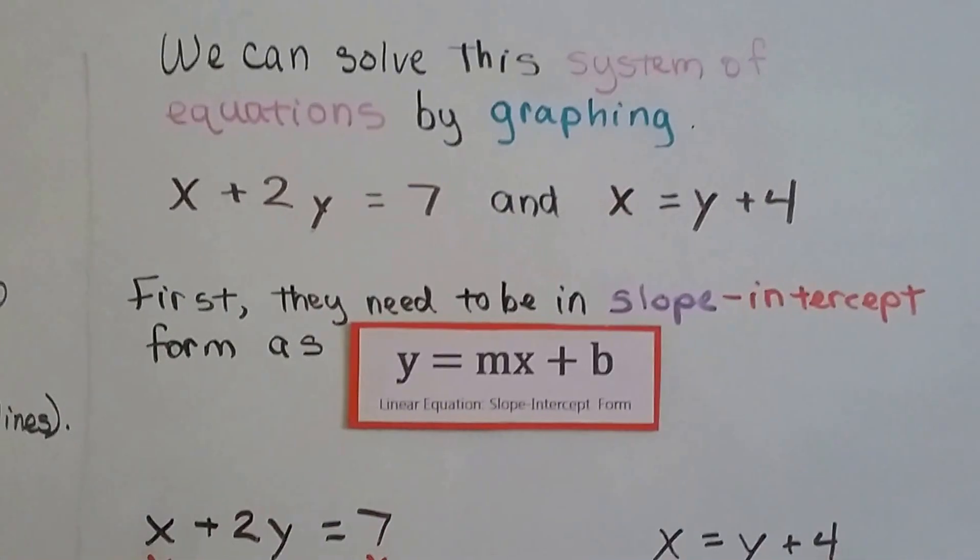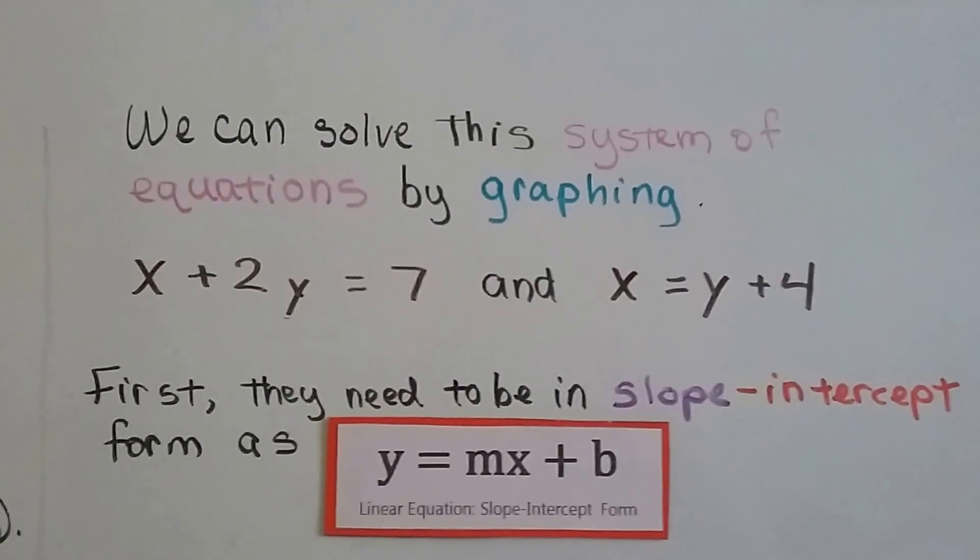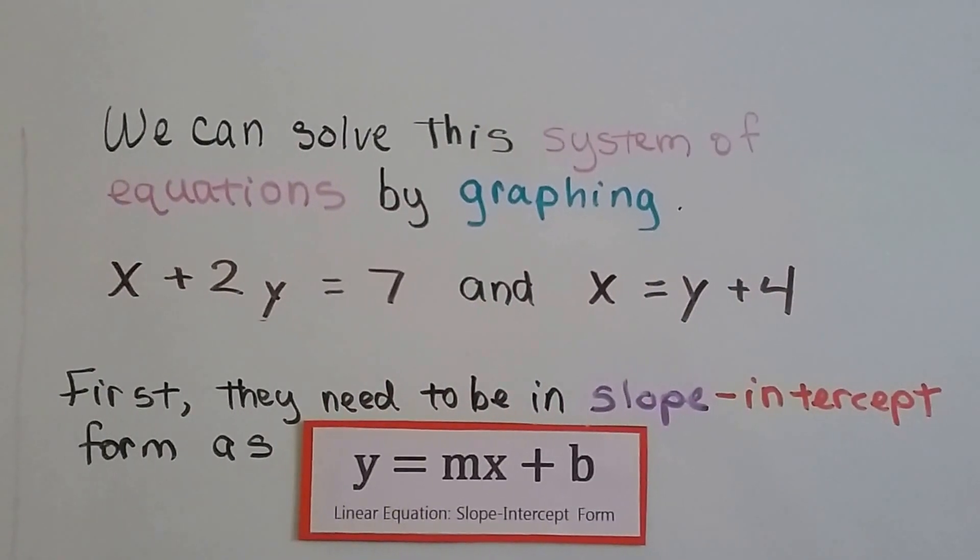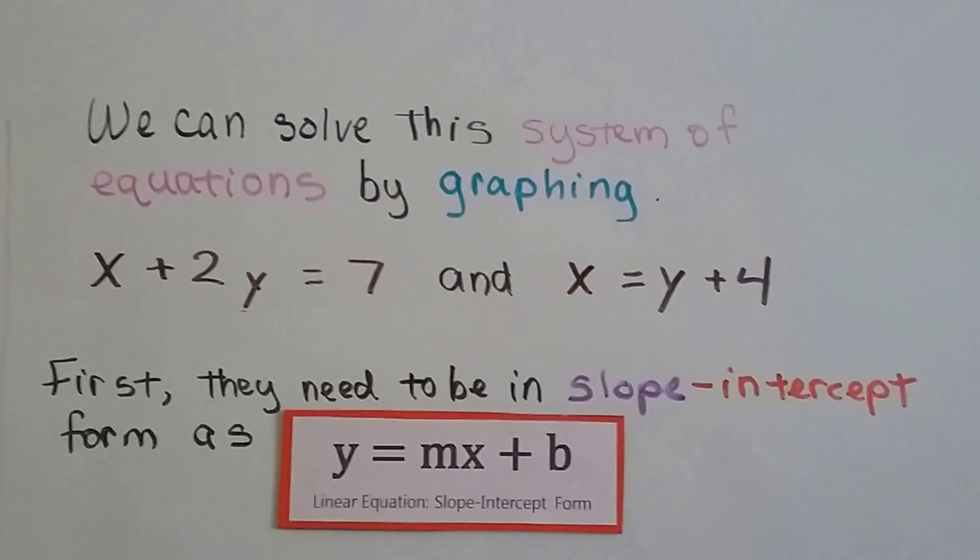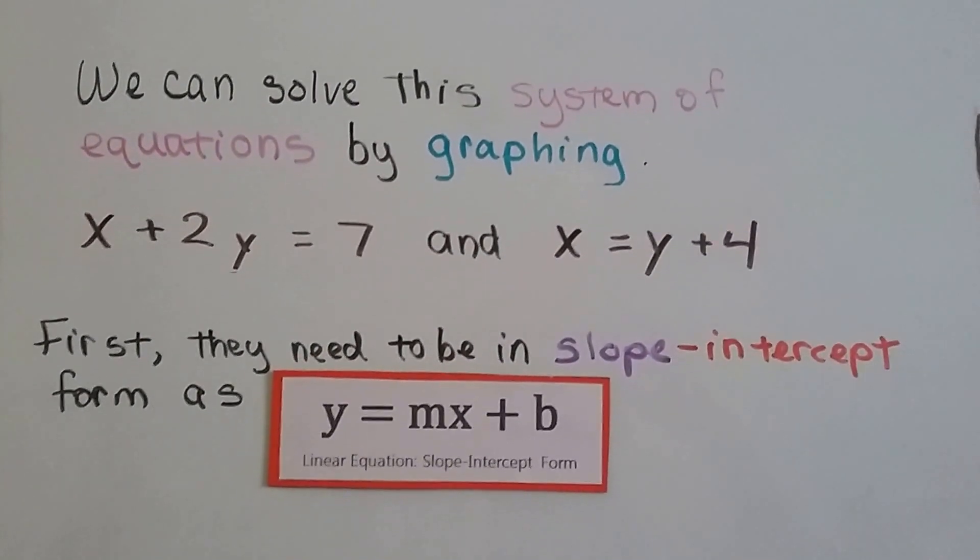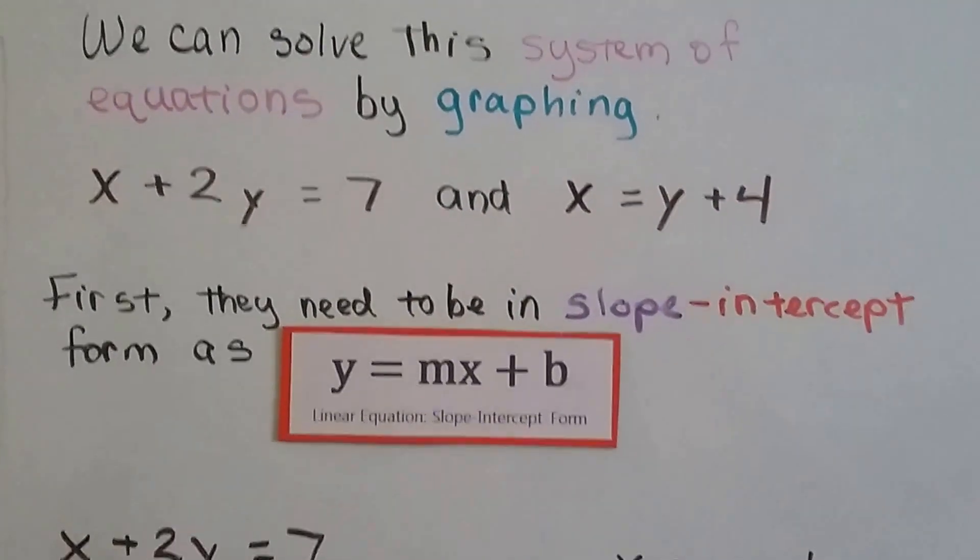We can solve the system of equations by graphing. So here's our system of equations. Our two equations are x plus 2y equals 7, and x equals y plus 4. So first they need to be in slope-intercept form as y equals mx plus b.